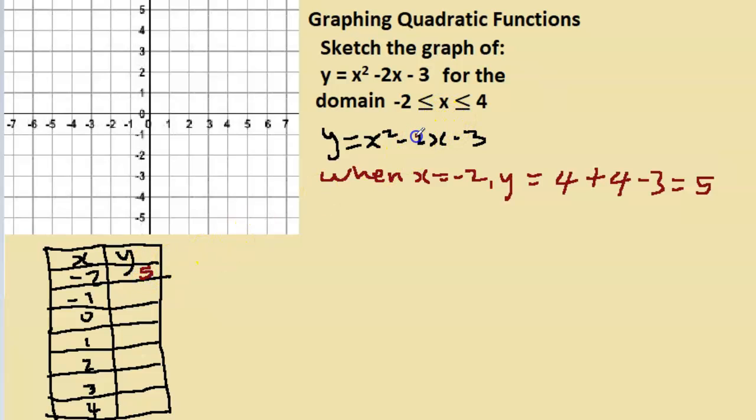Our next x value is -1, so this time we'll replace the x value with -1. So y = x², now remember x is -1 in this case, so x² becomes (-1)² which is -1 times -1 and that's positive 1. Now remember x is -1, so -2x is -2 times -1, positive 2, and we have our -3, so we end up with 0.